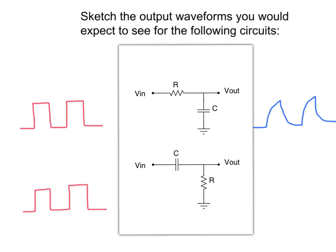The output will rise and fall exponentially. Depending on the time constant, which is given by the product of the resistor and the capacitor, the rise and fall times will vary.